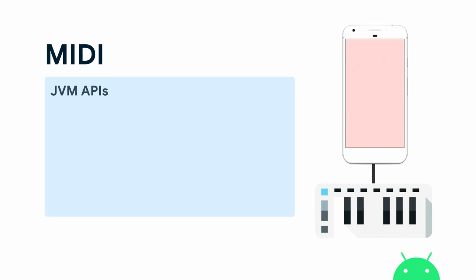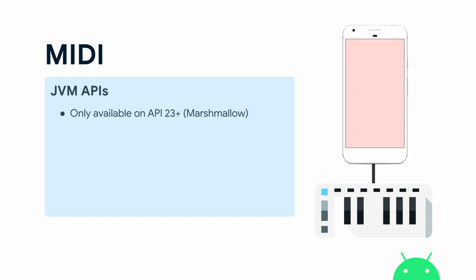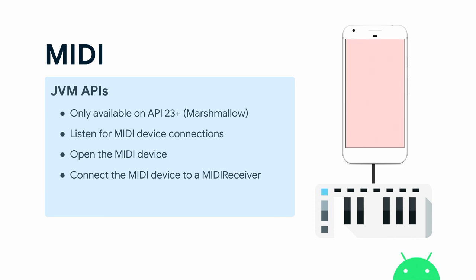The last thing to demo is MIDI. Imagine you have an effects processing app and want to control it via a foot pedal or slider. There's a custom-built MIDI controller here which sends a single control change message when the slider is moved. To implement MIDI, the first thing to remember is that MIDI support was added in Marshmallow — it only works on API 23 and above — so any MIDI code needs to be wrapped in a check for Marshmallow.